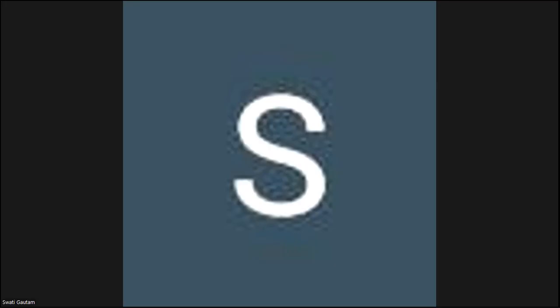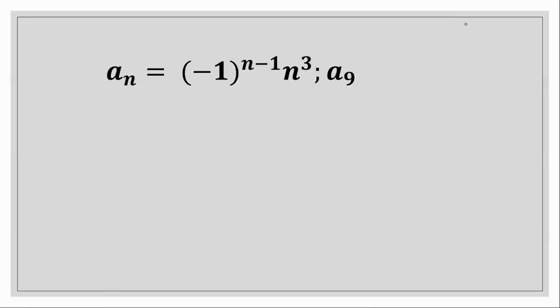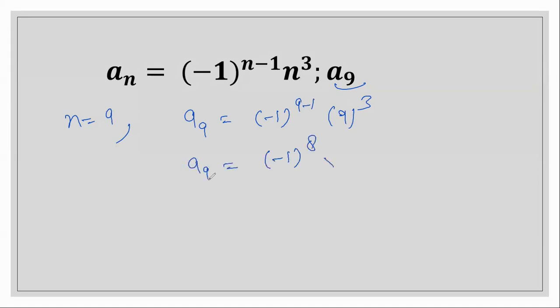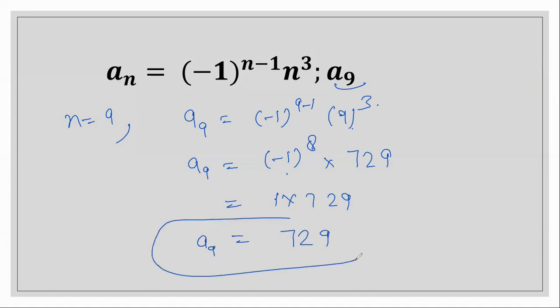Question number 9: we have to find a9, so n equals 9. a9 equals minus 1 raised to the power (9 minus 1) times 9 raised to the power 3. That is minus 1 to the power 8, times 9 cubed. Since a negative number raised to an even power is always positive, minus 1 to the power 8 equals positive 1. And 9 cubed is 9×9×9 which is 729. So a9 equals 729.